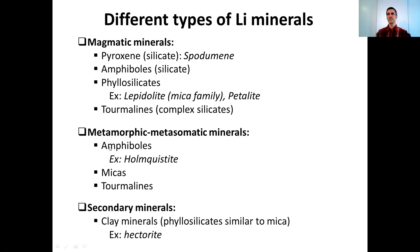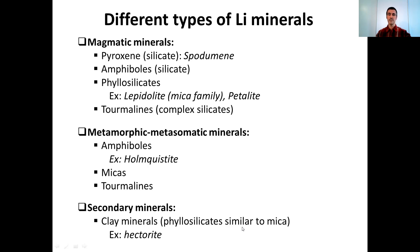The second main type of lithium minerals: the metamorphic and metasomatic minerals. We can find amphiboles among them — the holmquistite minerals, important for lithium. We can find also micas and tourmalines. Finally, the third type of lithium minerals: secondary minerals. They are clay minerals, phyllosilicates quite similar to mica, and hectorite is the mineral important for lithium.